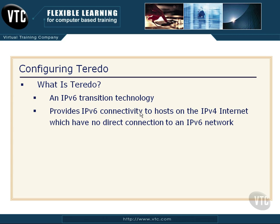Teredo is a transition technology because IPv4 and IPv6 are not compatible, so we're going to have to run them side-by-side and slowly phase version 4 out. What does Teredo do? Just like you see in the second bullet here, it provides IPv6 connectivity to hosts out there on the IPv4 internet, even though those hosts don't have any direct connection to an IPv6 network.